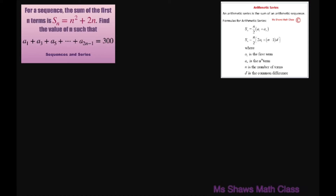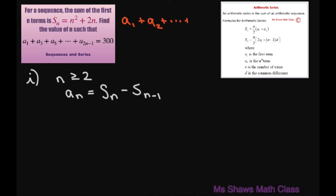We're going to look at Case 1, which is when n is greater than or equal to 2. What we want to do is find our nth term. The nth term is your sum of n minus your sum of n minus 1. For example, if you have a sub 1 plus a sub 2 plus dot dot dot plus a sub 9 plus a sub 10, then a sub 10 is your last term. Using the sum formula, you take the sum of the whole thing minus the sum of the n minus 1 terms to get that last term.